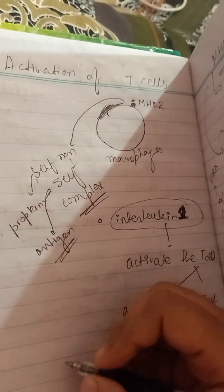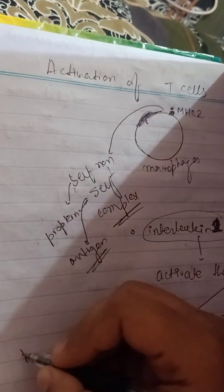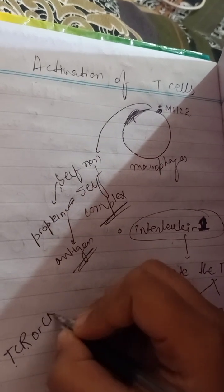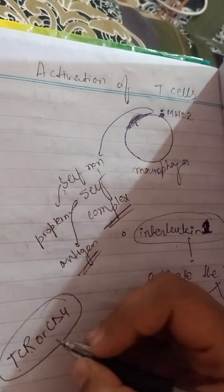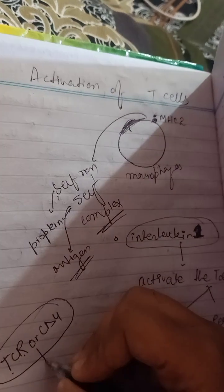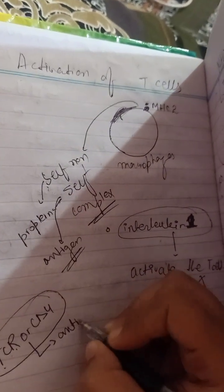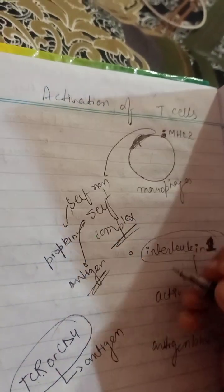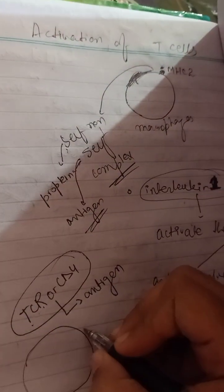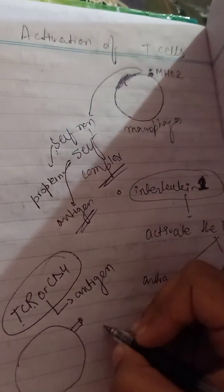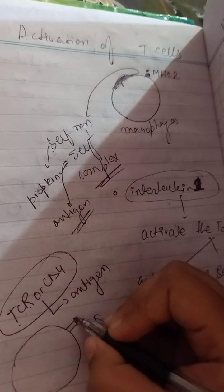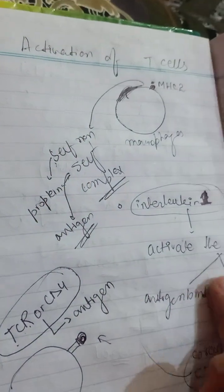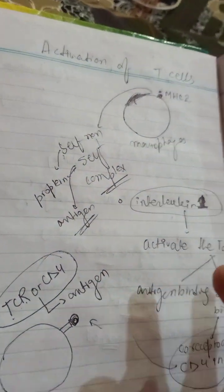The T cell receptor — TCR — or CD4 are the receptors on the T cells. This receptor will attach to the antigen; first it reads the antigen. For example, this is the MHC, and the co-receptor will attach with that MHC, and it will read the antigen.